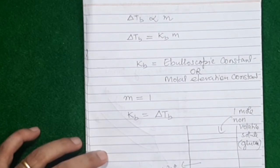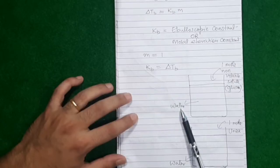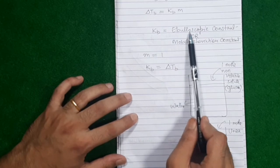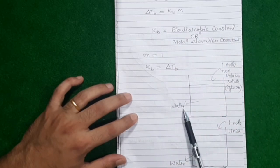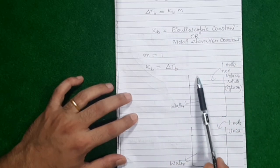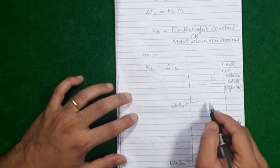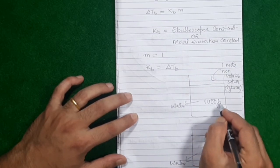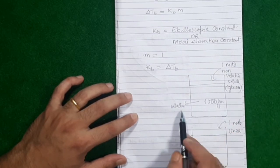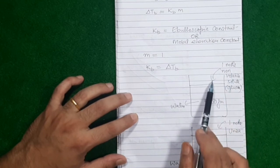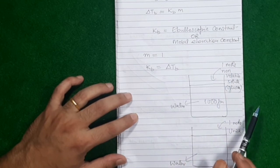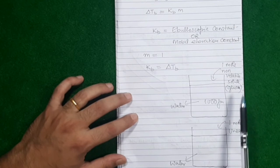I take 1000 grams of water and add 1 mole of a non-volatile, non-electrolyte solute — let's add glucose, 1 mole of glucose. So now what's the molality? It's 1. And when m is 1, Kb is exactly equal to delta Tb. This reveals the real meaning of Kb, the ebullioscopic constant.